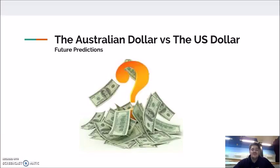In conclusion, due to the macroeconomic factors examined and the historical performance analysed, we believe that the Australian dollar will appreciate against the US dollar. Key factors include the Australian exchange rate correlating with interest rates, which are tipped to rise by the big banks and the head of the RBA, as well as inflation rates and economic growth. It is our final prediction that in the next three to six months, the AUD will appreciate against the USD.